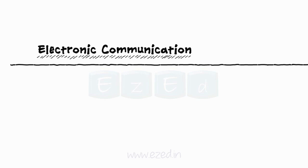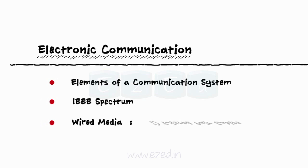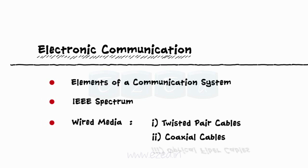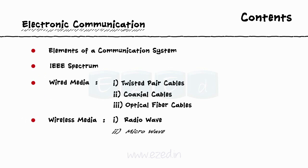In this EasyEd video lecture, we will study about electronic communication, in which we will learn about elements of a communication system, IEEE spectrum, different types of wired media such as twisted pair cables, coaxial cables, and optical fiber cables, and different types of wireless media such as radio wave, microwave, and satellite communication systems.